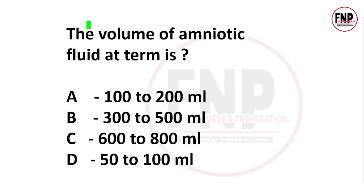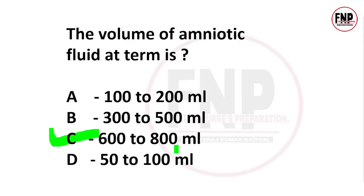Next question: Volume of amniotic fluid at term is? Options: 100–200 ml, 300–500 ml, 600–800 ml, 50–100 ml. Option C is correct. Term pregnancy par amniotic fluid ki kul maatra 600–800 ml hoti hai.